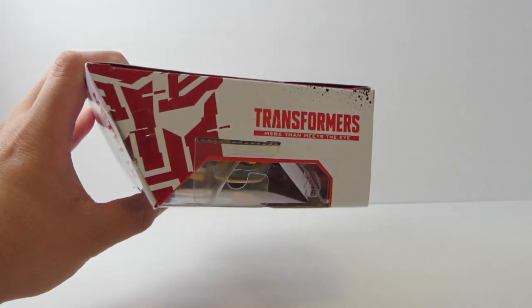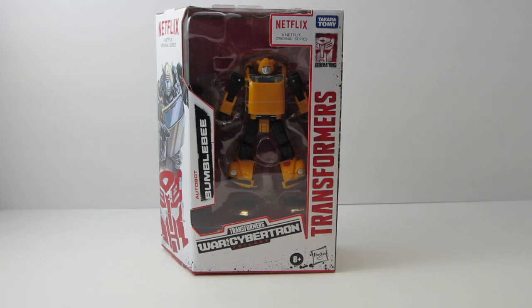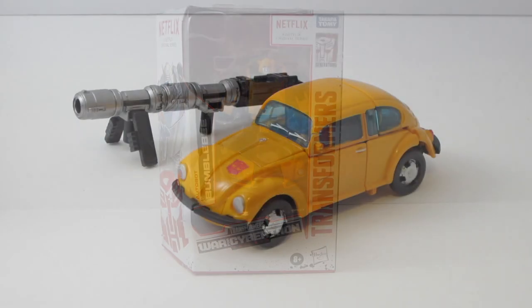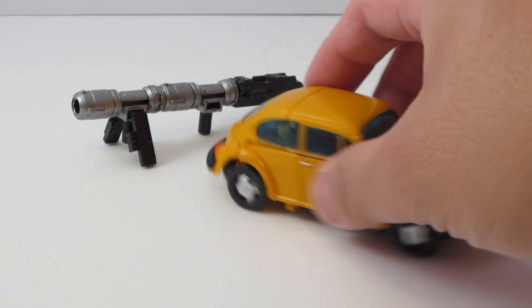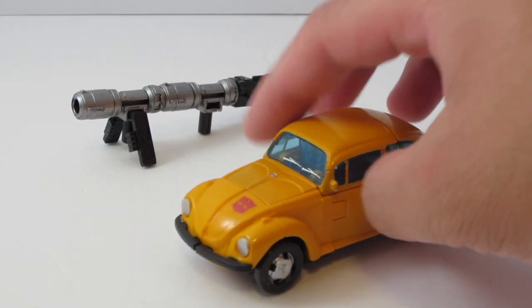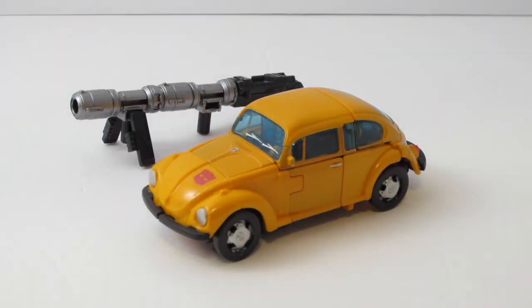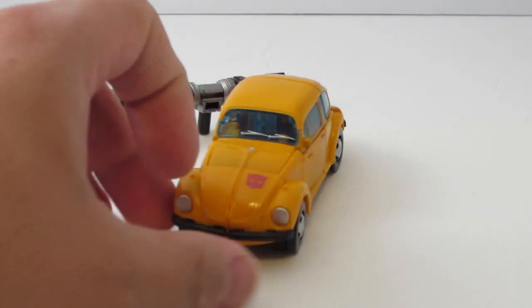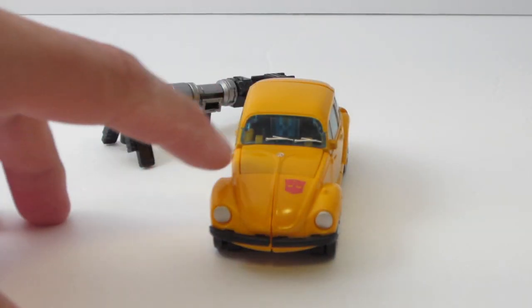We'll open this up and get straight to it. All right, so here is Bumblebee in vehicle mode. Scale of this figure right here, vehicle mode is pretty tiny, just like his mold buddy Cliffjumper, he's pretty tiny.